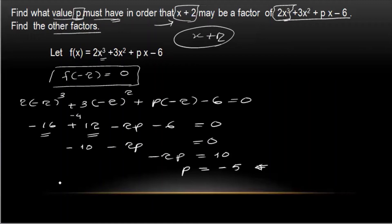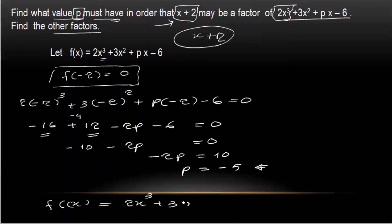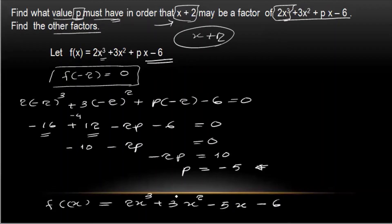We have this equation in the second equation. So f of x, f of x is equal to 2x² plus 3x squared. b is minus 5, so minus 5x. This equation gives minus 6.